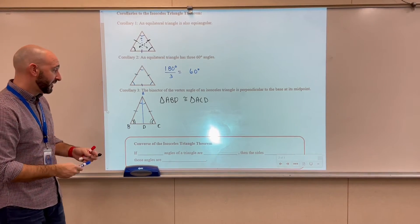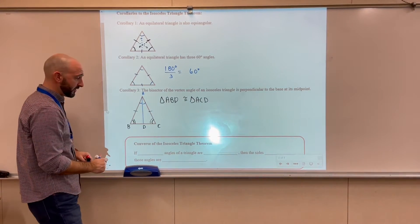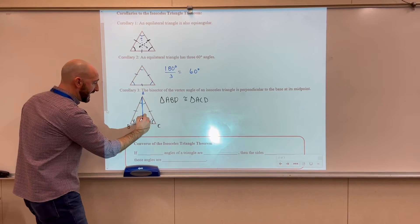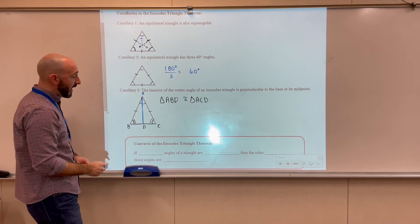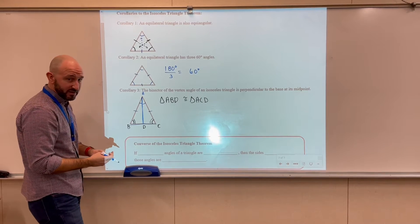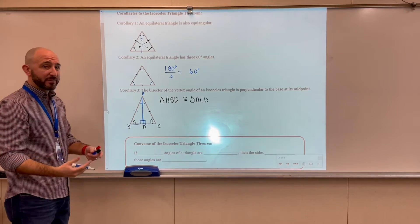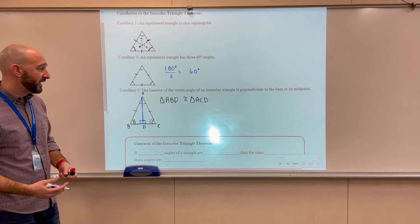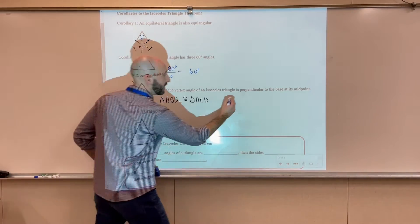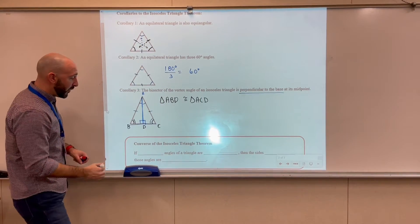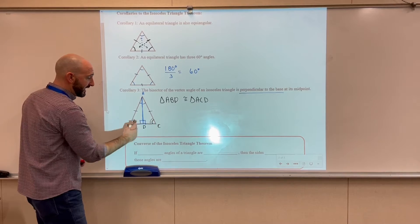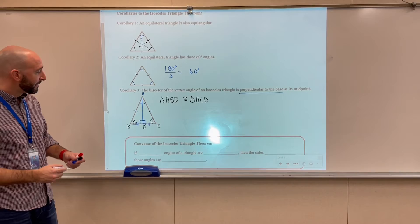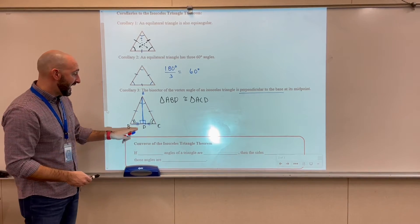Since we know those two triangles are congruent, we know that angle ADB and angle ADC have to be congruent. Now, if those two angles are congruent and adjacent, they have to be right angles because they form a linear pair and must add up to 180 degrees — so if they're congruent, they each have to be 90 degrees. That gives us the perpendicularity to the base. And because triangle ABD is congruent to triangle ACD, those two base segments are congruent, which means D is the midpoint of BC.